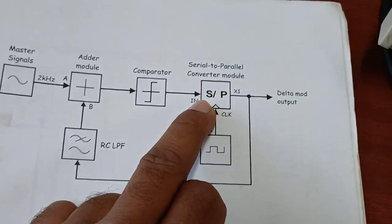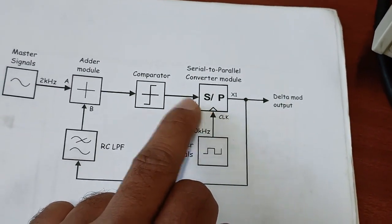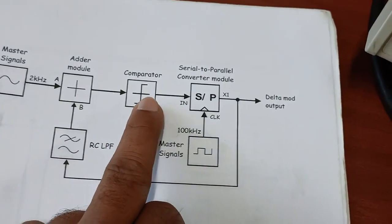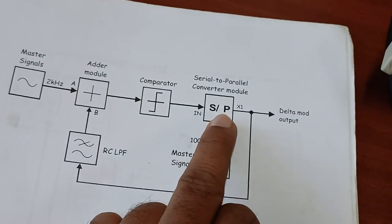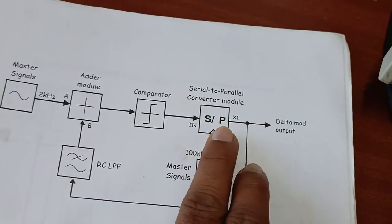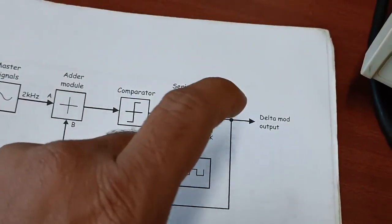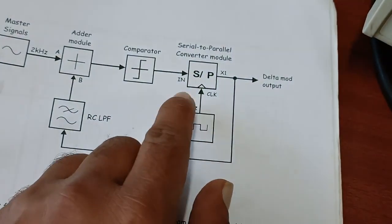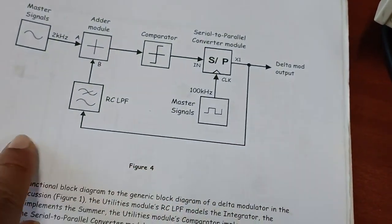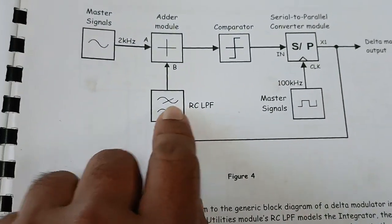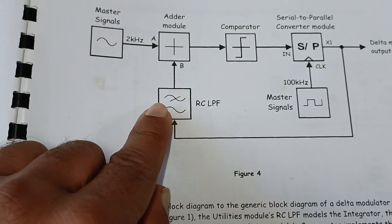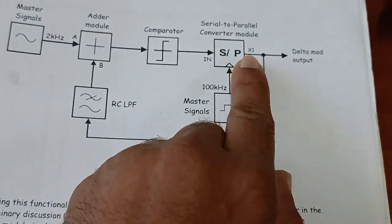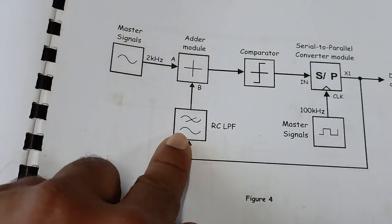There is a serial-to-parallel converter which converts bit-by-bit — that is 1, 0, 0, 1, 0 — from serial bits to parallel. It is also required to convert these binary bits to analog, and that is passed through an RC low pass filter. The output of the serial-to-parallel converter is fed back through the RC low pass filter.